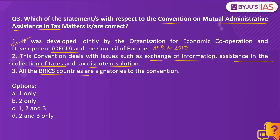Statement 1 is correct. Statement 2 is also correct, because this convention provides for all possible forms of administrative cooperation between states in the assessment and collection of taxes — ranging from exchange of information, assistance in collection of taxes, and tax dispute resolution. We know that India is a signatory. Besides India, all BRICS nations are also signatories to this convention, making Statement 3 also correct. Therefore, the answer to this question is option C: 1, 2 and 3.